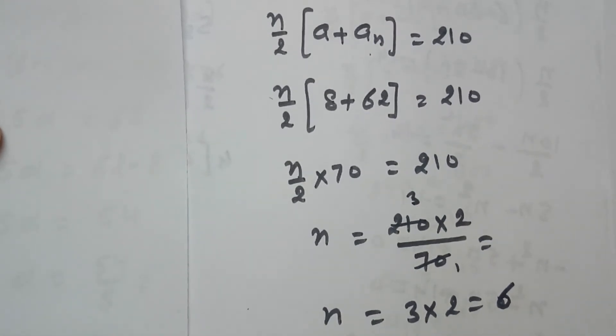Now what we have to do, we have to find the common difference. So now for that we will use the formula AN, which is given AN equals to 62.